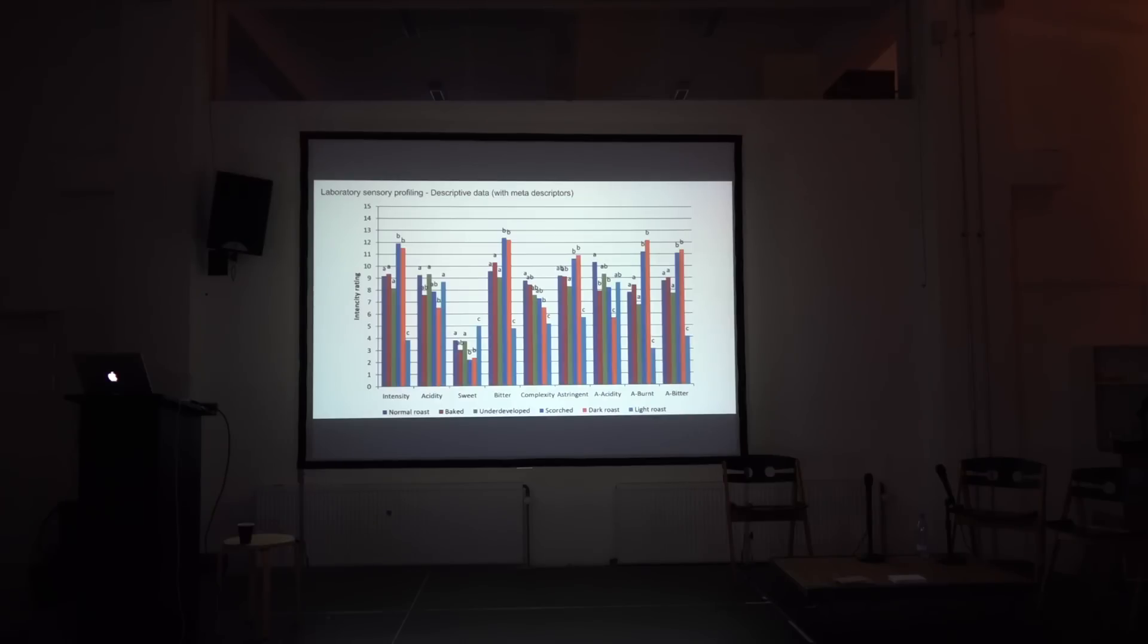So how did it turn out? It turned out exactly like this. Here you can see each descriptor and then the average score for each descriptor. And then these letters here will tell you if they are statistically significantly different from each other. So here you can see the intensity of the normal baked and underdeveloped, they look a bit different but statistically they are not. And then you can see that the scorched and dark roast are very different. And the light roast has got its complete own category here. So it's very low in intensity. And the scorched and the dark is very high in intensity. Not a surprise.